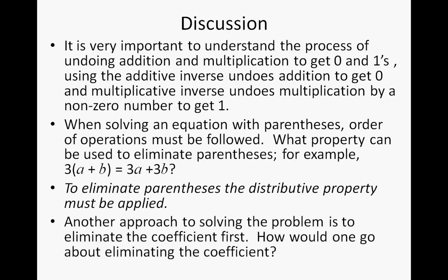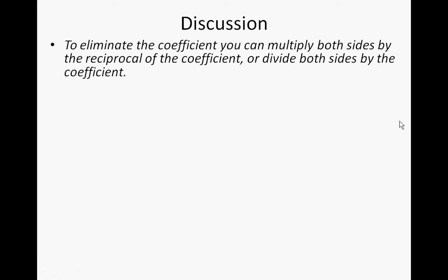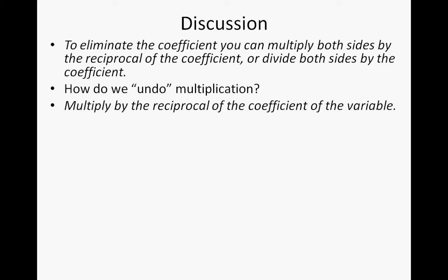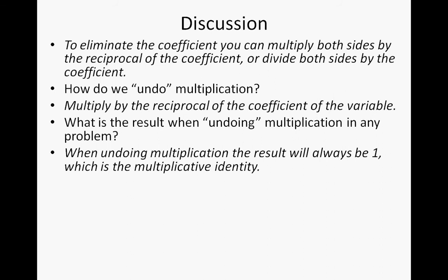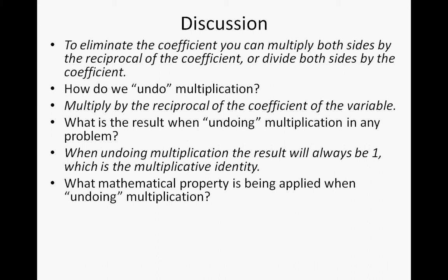Another approach to solving is to eliminate the coefficient first. To get rid of the coefficient without using the distributive property, you can multiply both sides by the reciprocal of the coefficient — which is the same as dividing both sides by the coefficient. To undo multiplication, multiply by the reciprocal of the coefficient of the variable. The result when undoing multiplication will always be one — the multiplicative identity. The mathematical property applied when undoing multiplication is called the multiplicative inverse.